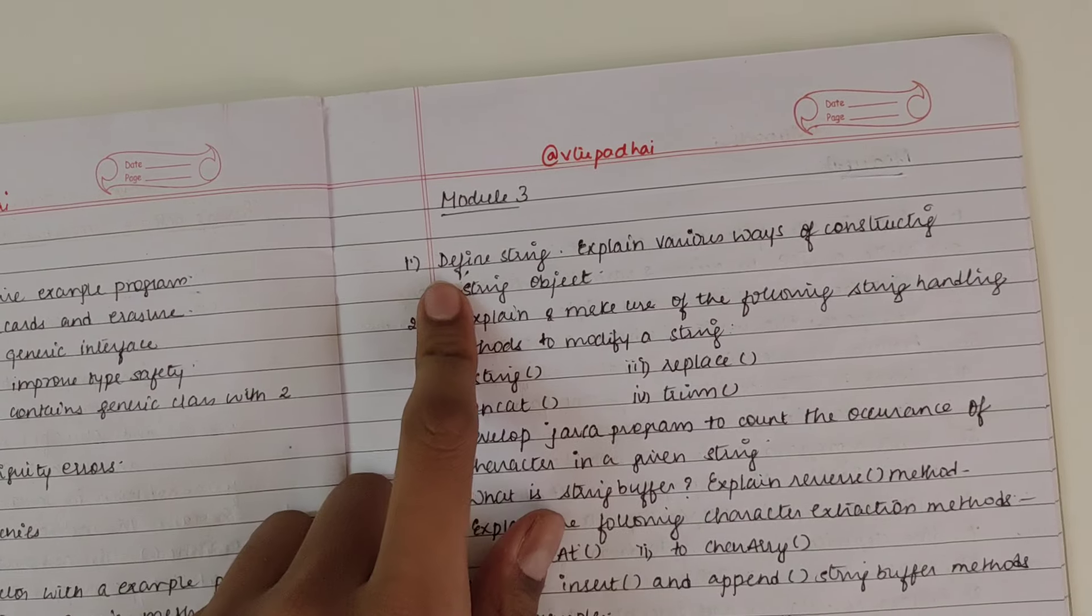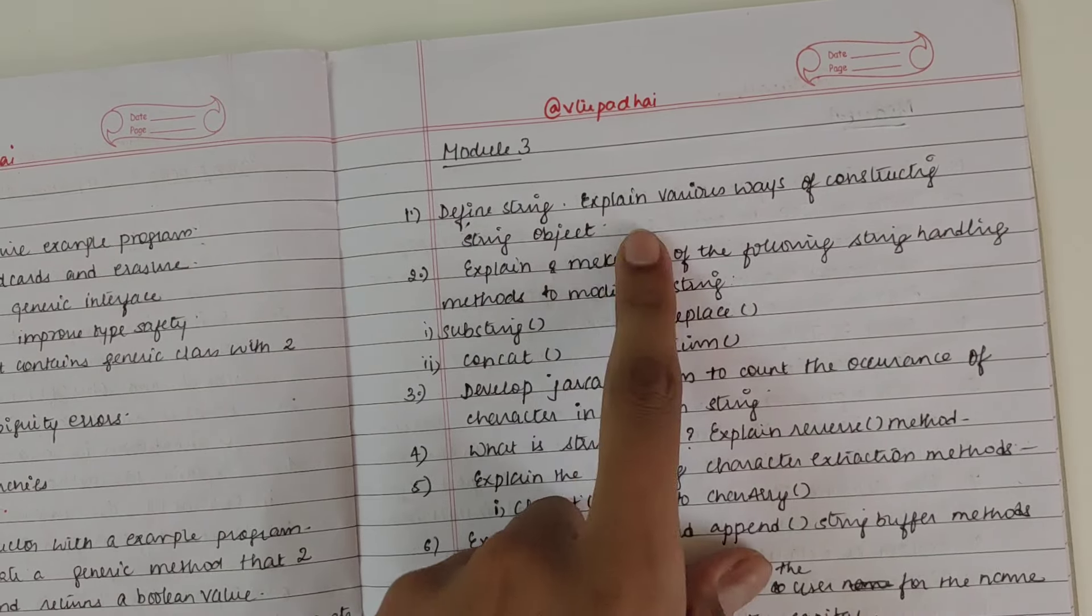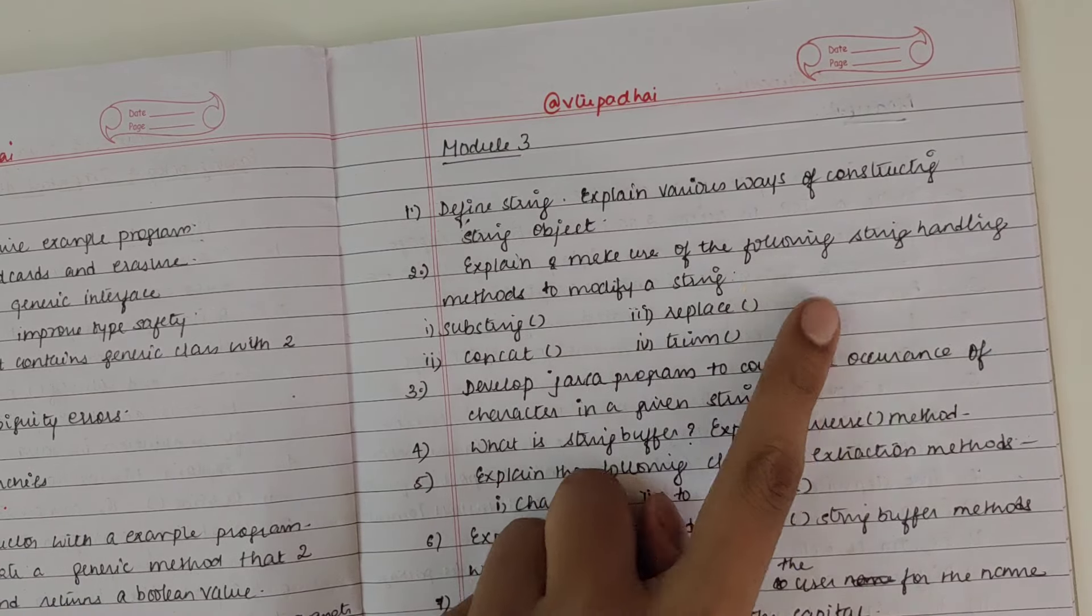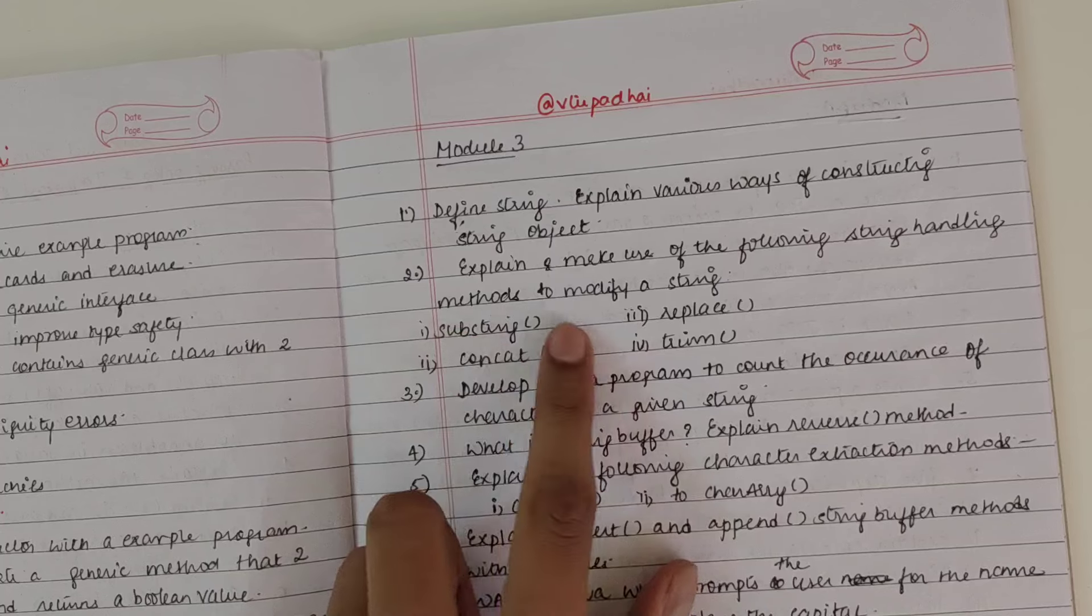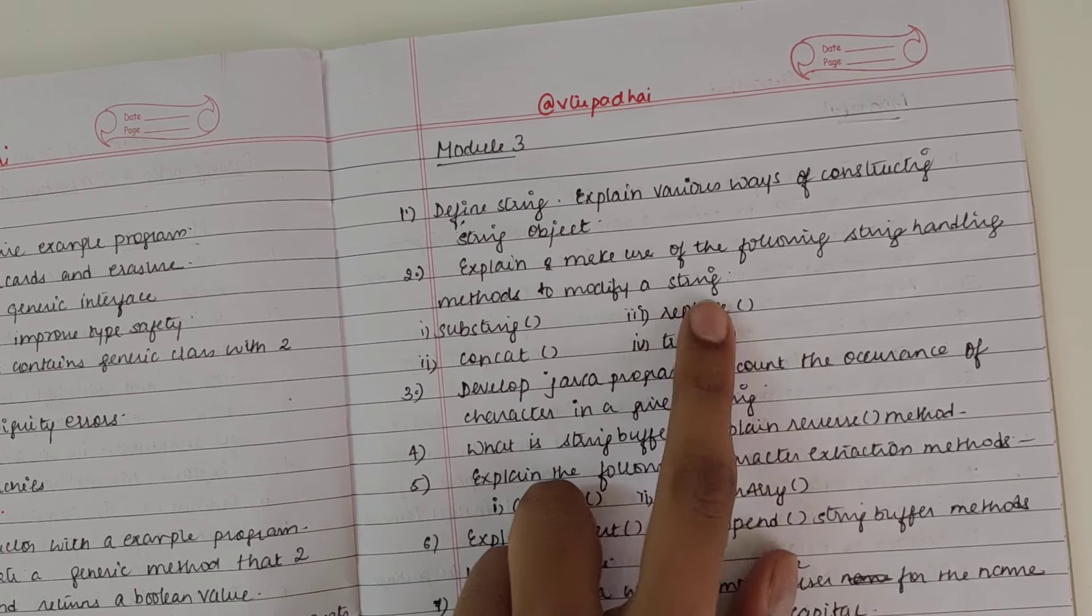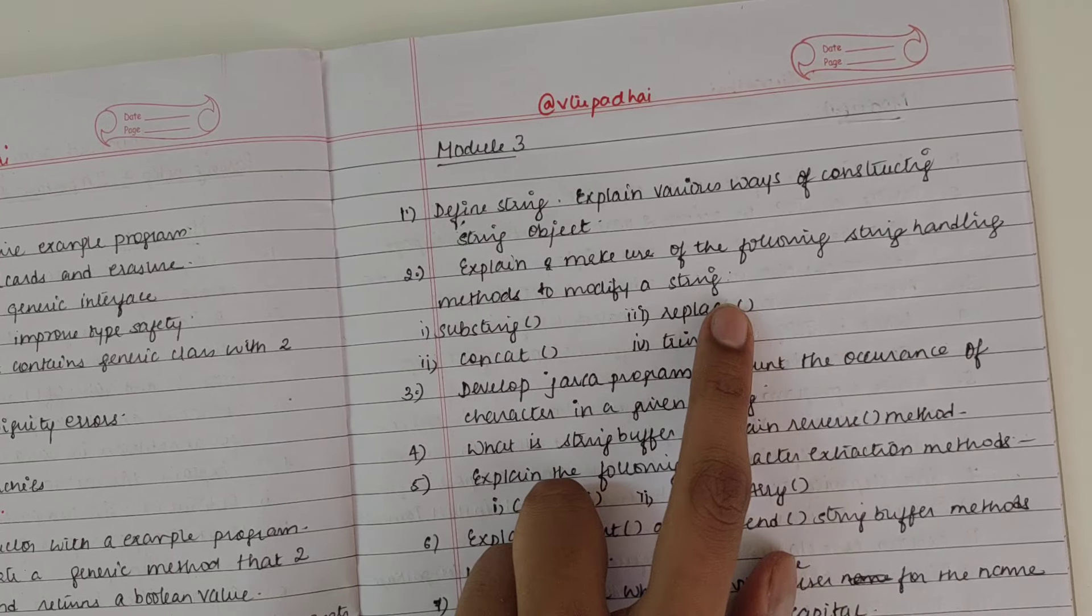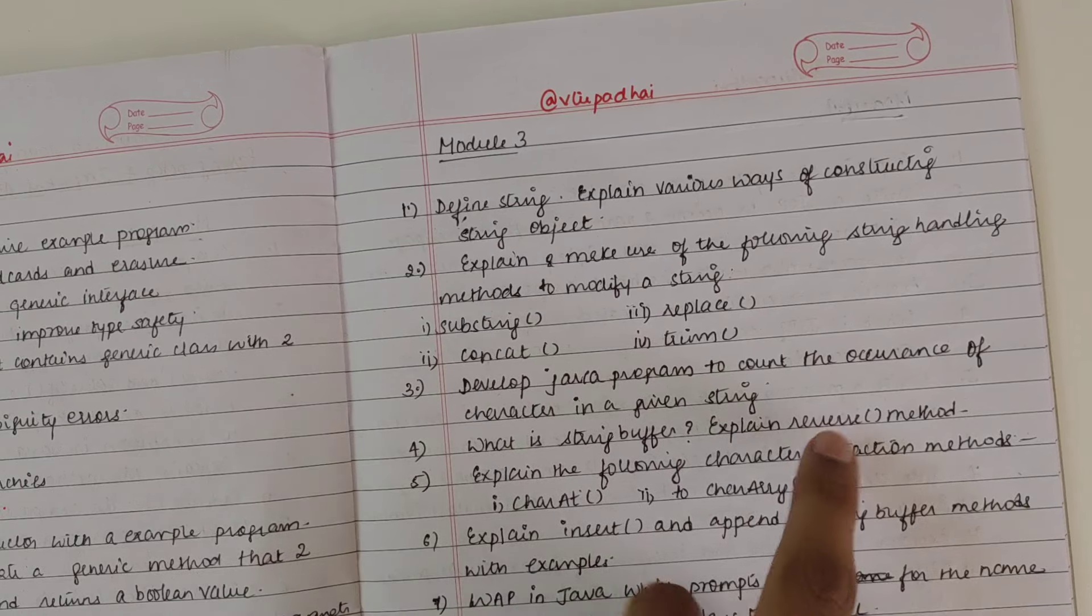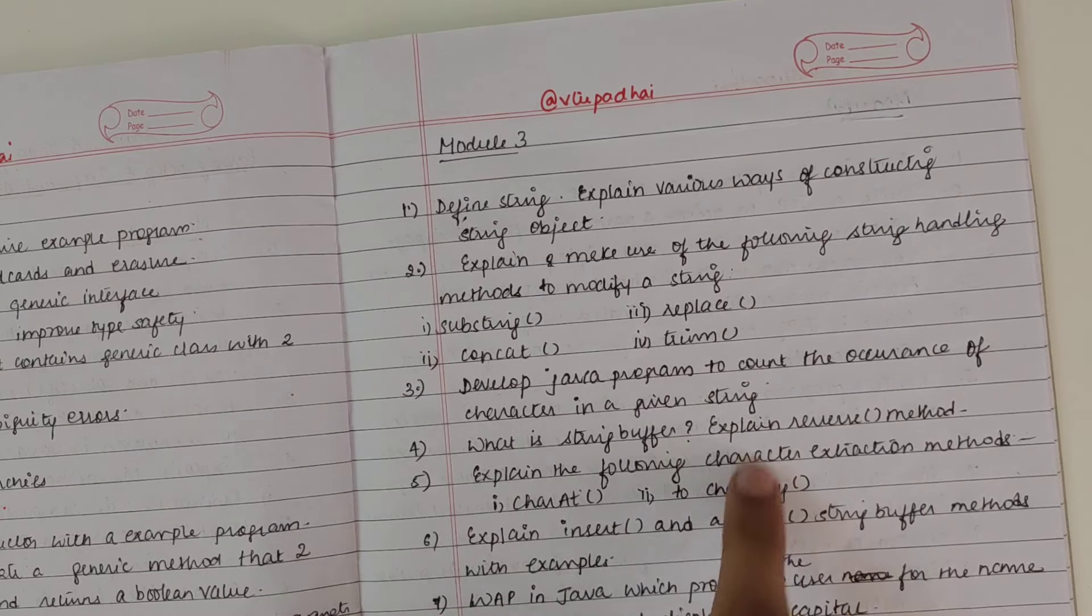Next is Module 3: Strings. First question: define string and explain the various types of constructing a string object. Different methods explained with syntax and example. Whenever questions come like this, make sure to include syntax and sample function: substring, concat, replace, and trim. Develop a Java program to count the number of occurrences of a character in a string.